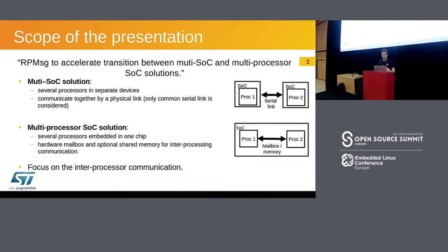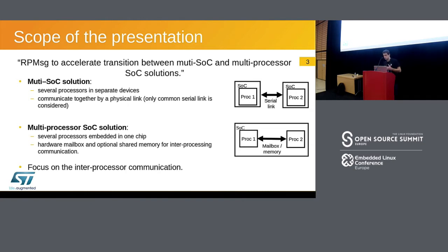So what is the scope of this presentation? I will speak about multi-SOC solutions and multi-processor SOC solutions. A multi-SOC solution is one where several processors communicate together but are in separate SOCs, so communication is through a physical link — here we focus on a serial link. A multi-processor SOC solution embeds several processors that communicate together through shared memory, or mailbox, or both, and mainly in this case we use RPMessage.